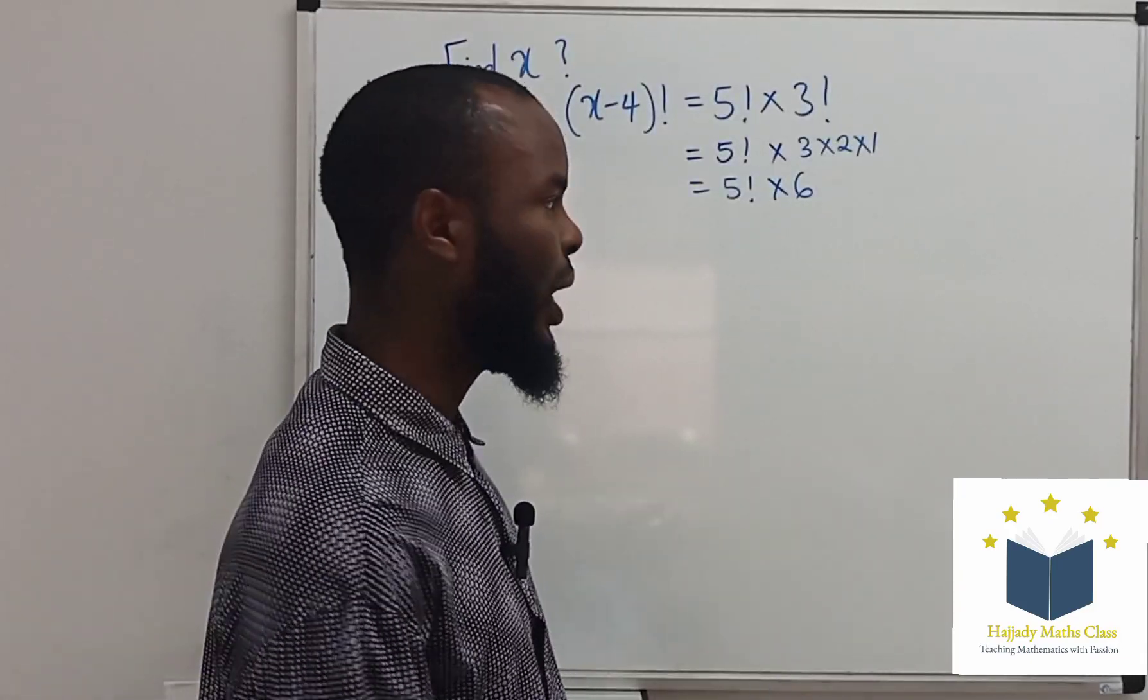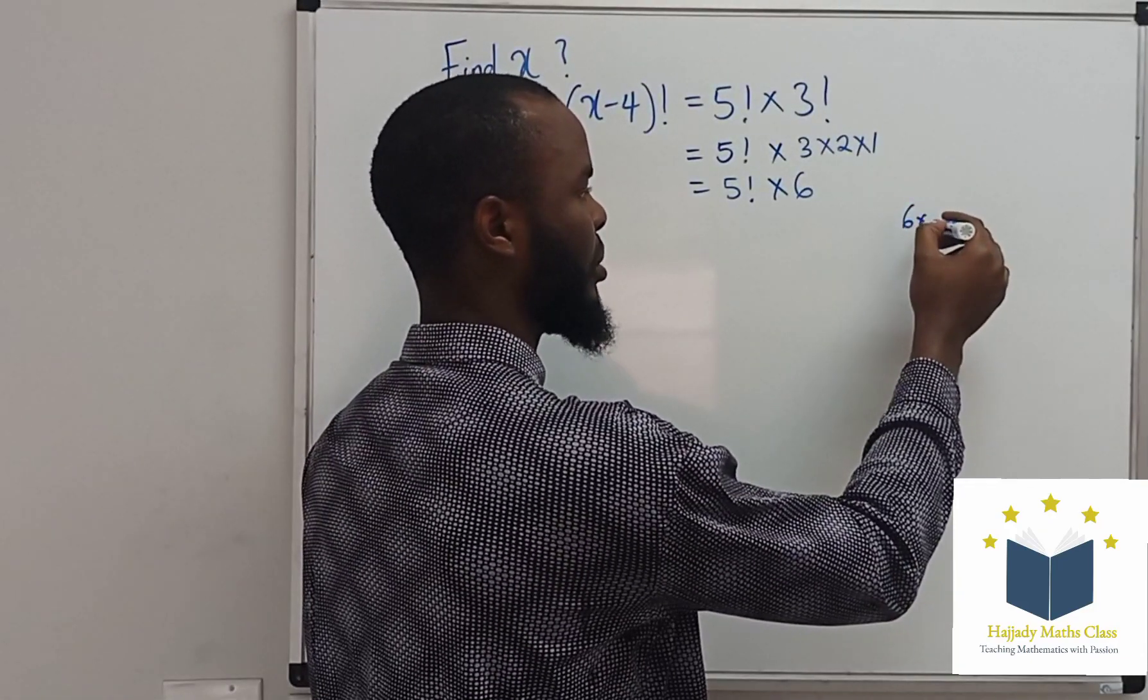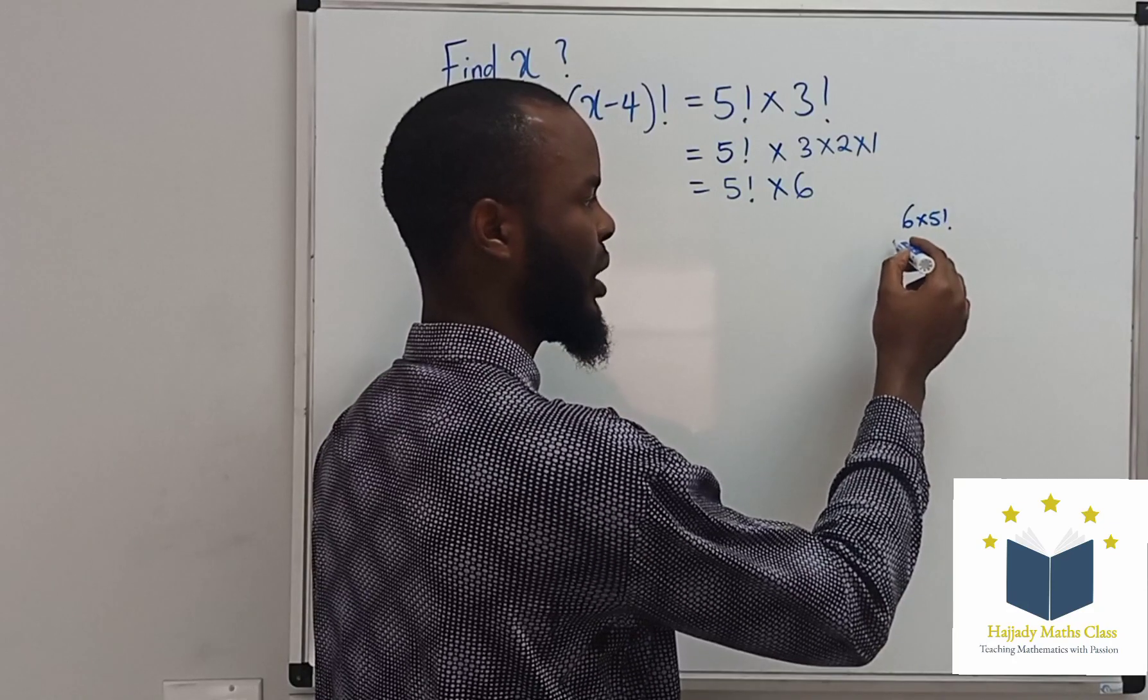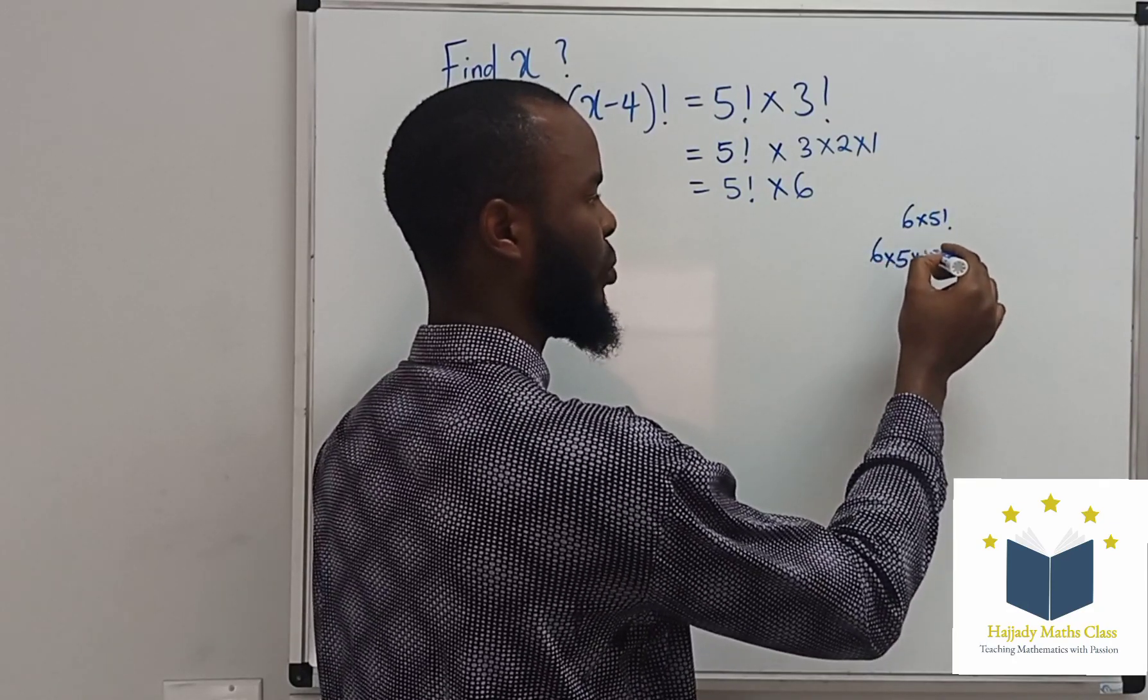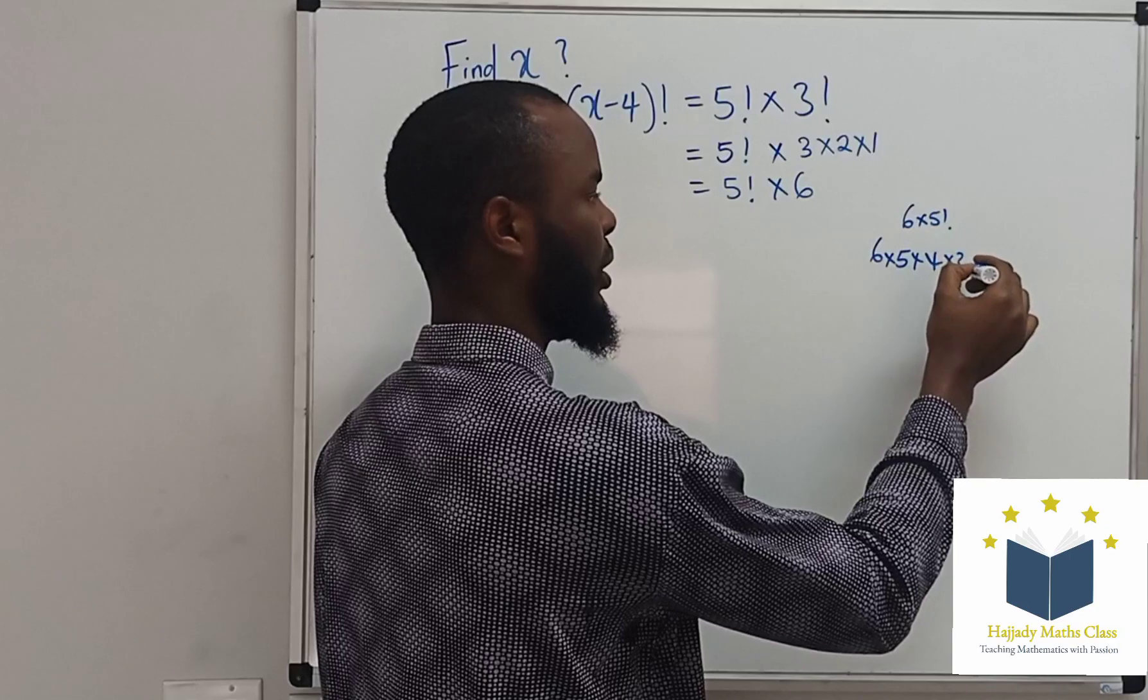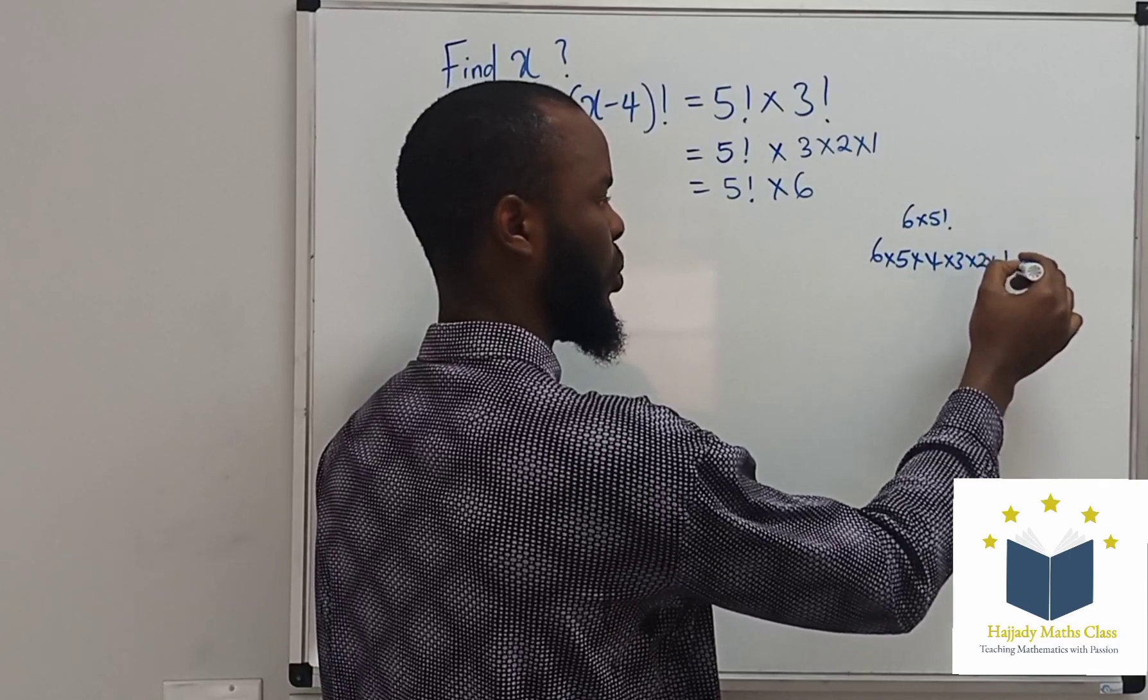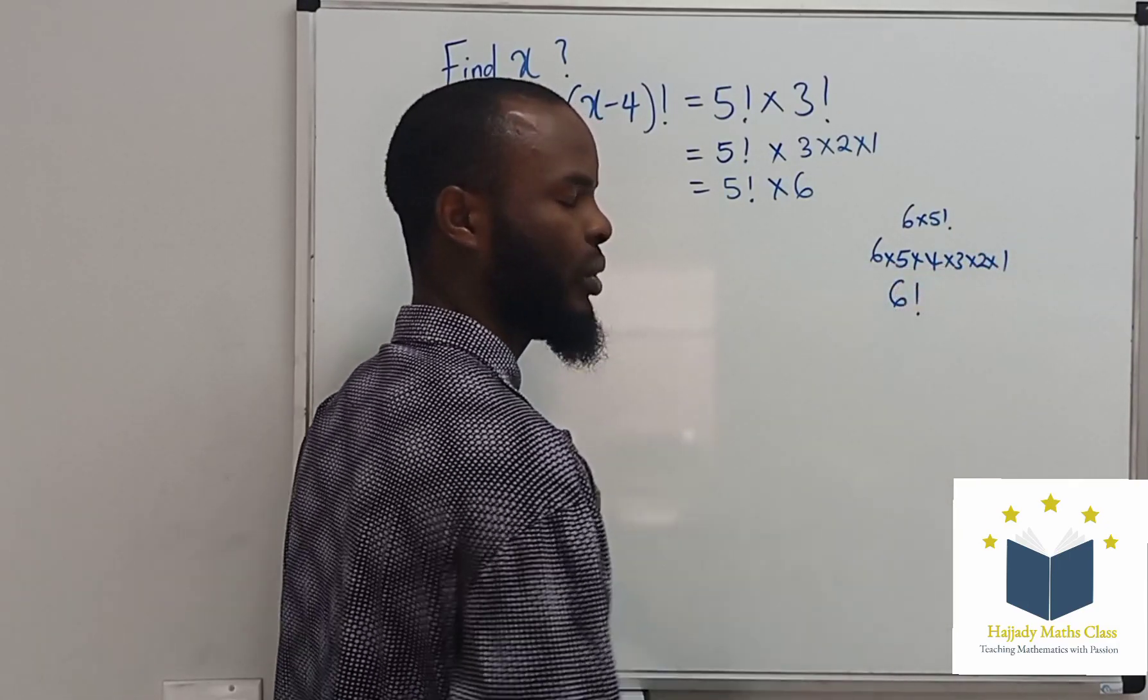And don't forget, if you have 6 times 5 factorial is the same thing as 6 times 5 times 4 times 3 times 2 times 1, which is the same thing as 6 factorial.